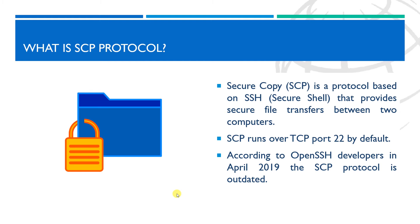SCP runs over TCP port 22 by default. According to the OpenSSH developers, the Secure Copy Protocol is outdated, inflexible, and not readily fixed. They recommend the use of more modern protocols like SFTP and rsync for file transfer.